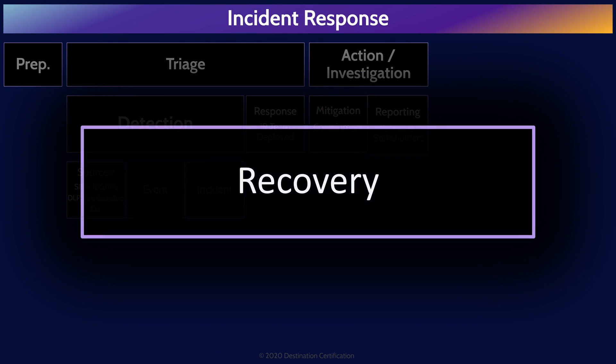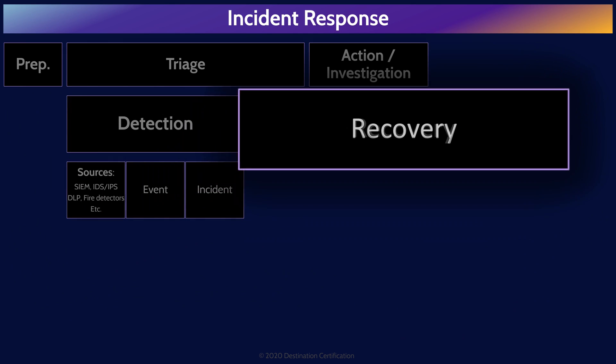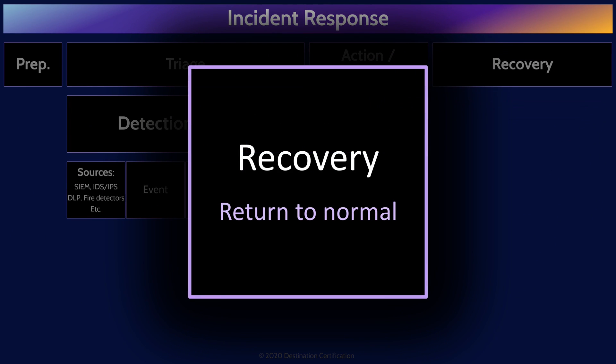The recovery category is where we work on getting things back to business as usual and making improvements so the same incident doesn't occur again. The recovery step is where we work on returning things to business as usual. In the worm outbreak example, we eradicate the worm and begin reconnecting systems to the network. Or in the fire example, we clean up the charred smoking mess of the office, install new carpeting, paint the walls, move out the furniture. These are examples of recovering to get back to business as usual.